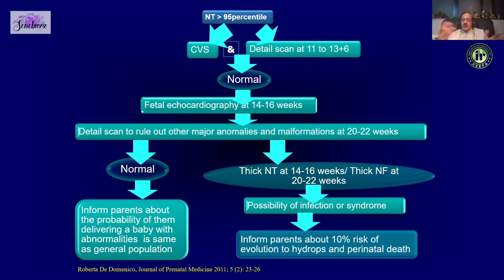It is very important to follow up these fetuses. Do an early anomaly scan at maybe 14 to 16 weeks and look out for cardiac anomalies, skeletal dysplasia, and diaphragmatic hernias. If the nuchal fold persists, consider ruling out infection.